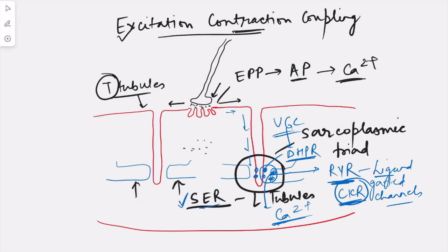For relaxation, it is important that calcium re-enters the smooth endoplasmic reticulum, and this is brought about by a pump known as smooth endoplasmic reticulum calcium ATPase (SERCA). This pump is present on the membrane of the smooth endoplasmic reticulum, and as soon as calcium is released, it starts pumping calcium back in, leading to relaxation. Fundamentally, it is the release of calcium that links the excitation — the action potential — with the mechanical activity of contraction.